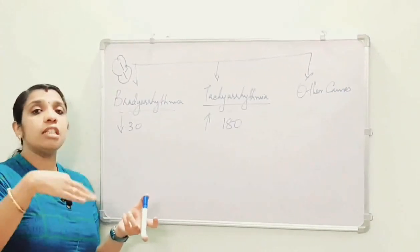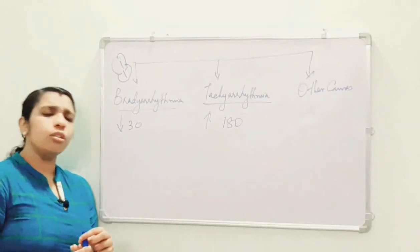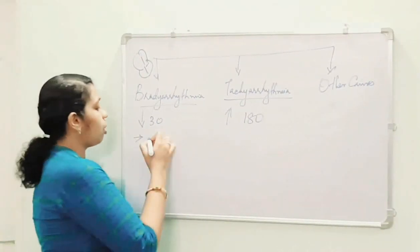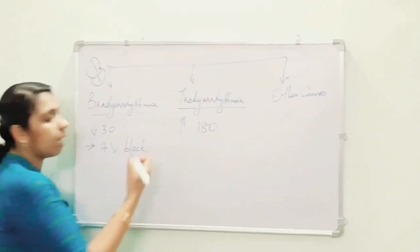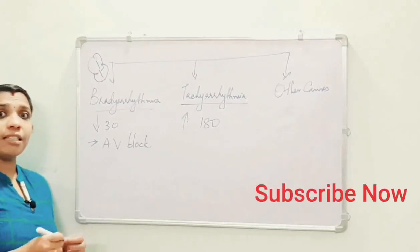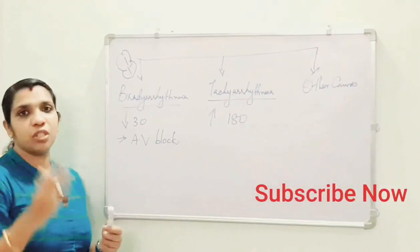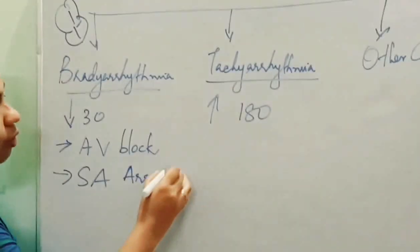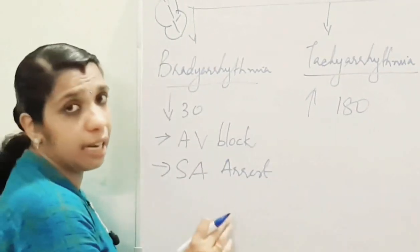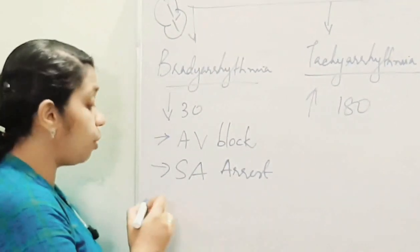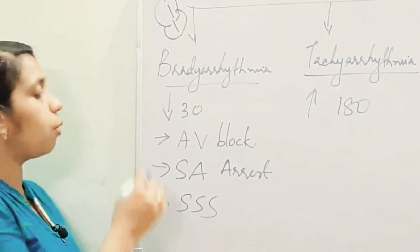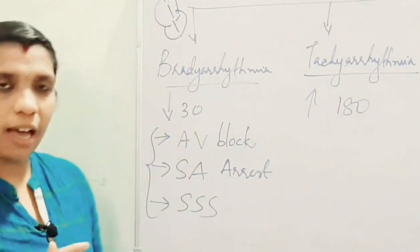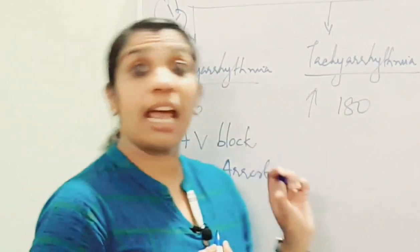The causes of bradyarrhythmia — that is, changes in heart rhythm leading to a reduced heart rate below 30 — include: first, AV block, where there is a block in the transmission of impulse; second, sinoatrial arrest, where there is no production of impulse; and third, sick sinus syndrome. These are the most important rhythm changes that lead to reduced heart rate and syncope.